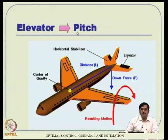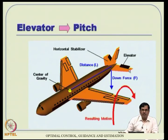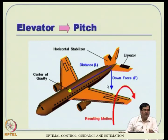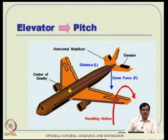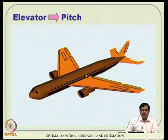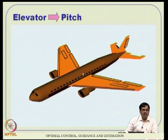Pitching motion is created largely through elevators, which are deflected symmetrically - either both up or both down. When both are up, there is a slight downward force, but because the moment arm from CG to the tail is very long, a large pitching moment is generated. This creates upward pitching action. The elevators are deflected to create pitch-up or pitch-down motion.